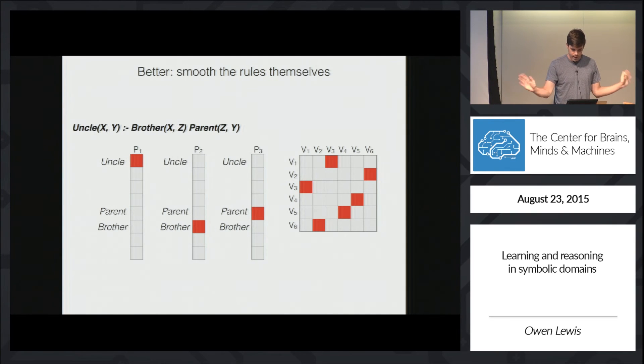So a better approach, untried yet but formulated, is to differentiate each rule itself. So the idea here is that we can write down a rule like this one, which says that x is the uncle of y if for any z, x is the brother of z, and z is the parent of y. So in constructing a rule...